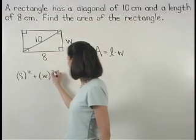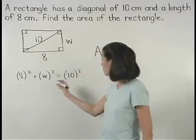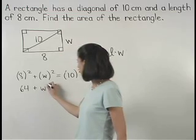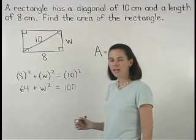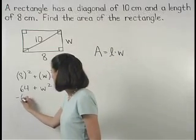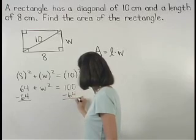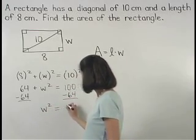w squared equals 10 squared. Or 64 plus w squared equals 100. And subtracting 64 from both sides gives us w squared equals 36.